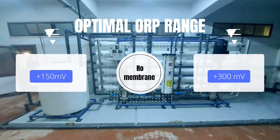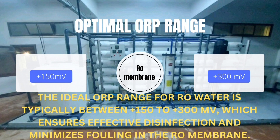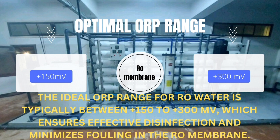Optimal ORP Range: The ideal ORP range for RO water is typically between +150 to +300 mV, which ensures effective disinfection and minimizes fouling in the RO membrane.